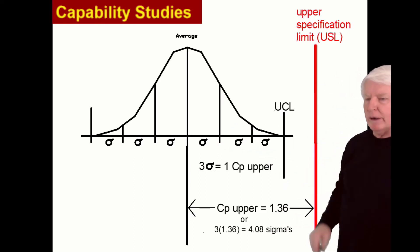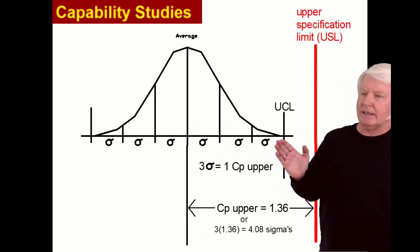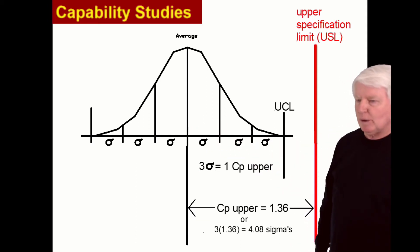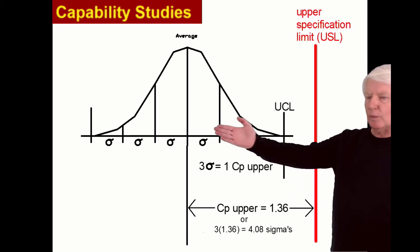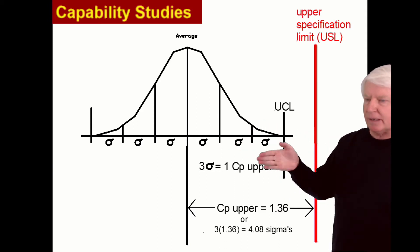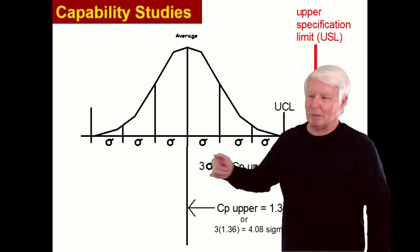So there's the picture of 1.36 CP upper, which is 136% of three sigmas, if you want to look at it that way. Or you can see it as 1.36 three sigma units. It means the same thing, but whatever works for you.